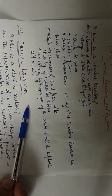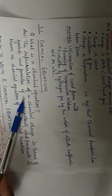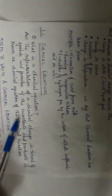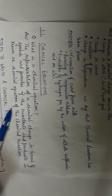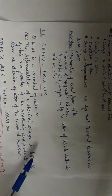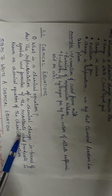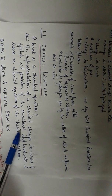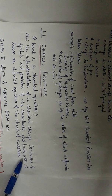Now we will talk about the chemical equation. What is a chemical equation? The representation of a chemical change in terms of symbols and formulae of the reactants and the products is known as a chemical equation of the chemical reaction. We represent the chemical reaction in the form of symbols and formulae. The substances which combine together are known as reactants, and they combine to form a different compound that is known as the product.